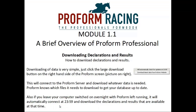Downloading declarations and results. The first thing you are going to need to know is how to download the latest data from the ProForm server. Downloading is very simple — you just click on the large download button on the right hand side of the ProForm screen. This will connect to the ProForm servers and download whatever data is needed. ProForm knows which files it needs to download to get you up to date.